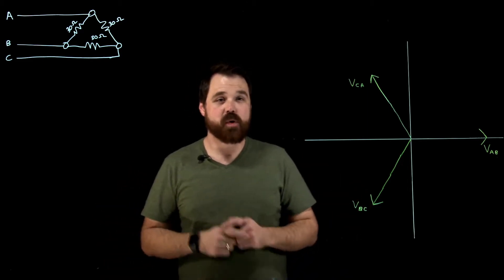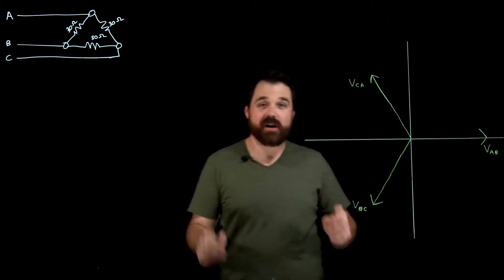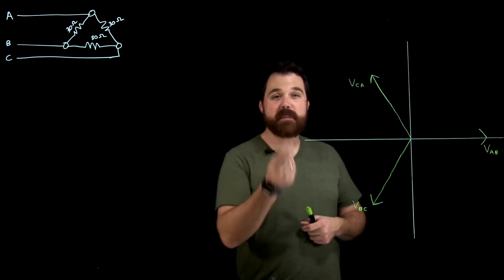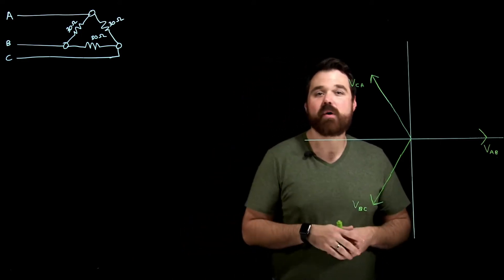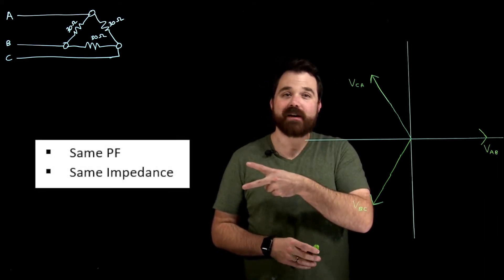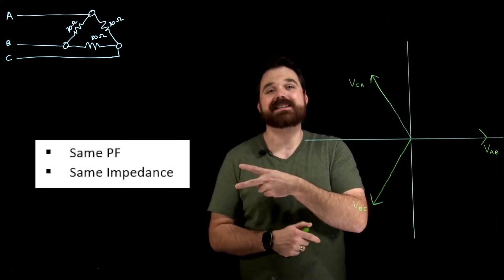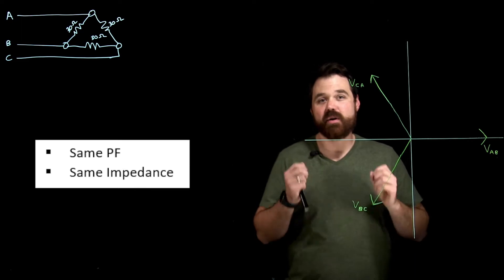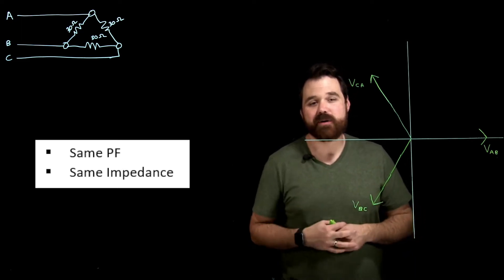A balanced load needs to meet two criteria in order to be considered balanced in either delta or y. We need to have the same power factor and the same impedance in each phase. Those two rules are very important in order to be balanced.